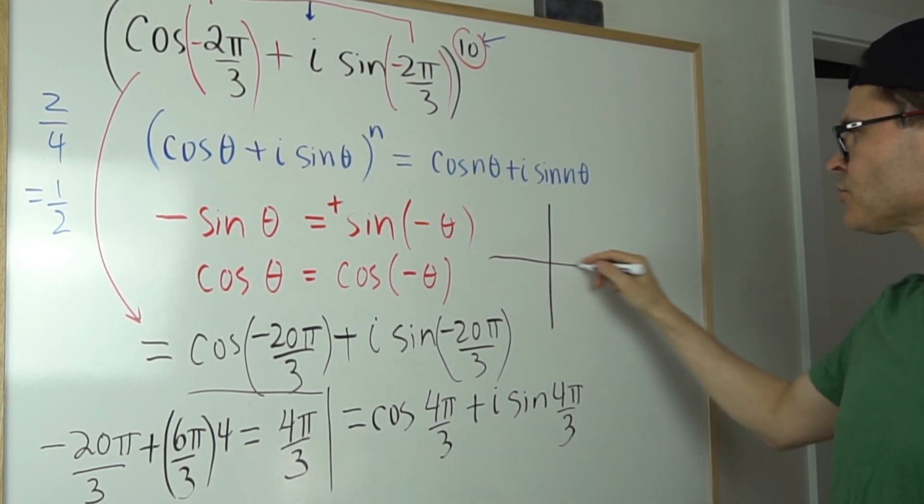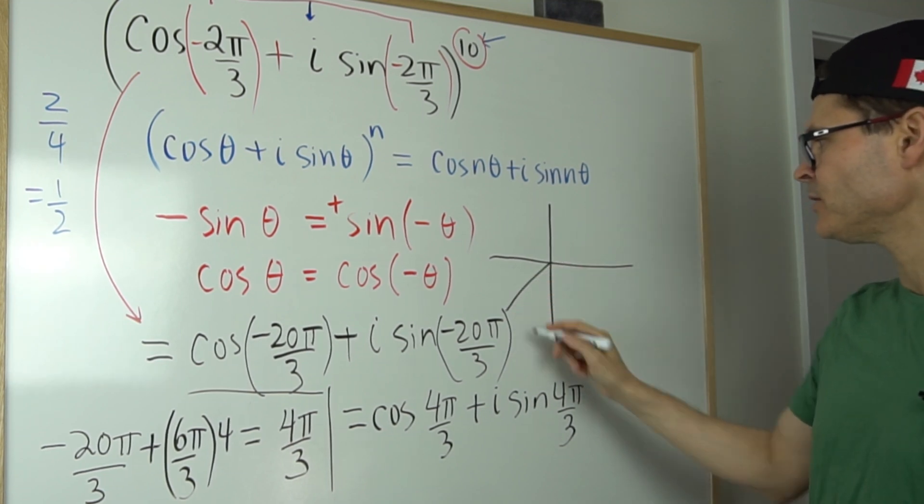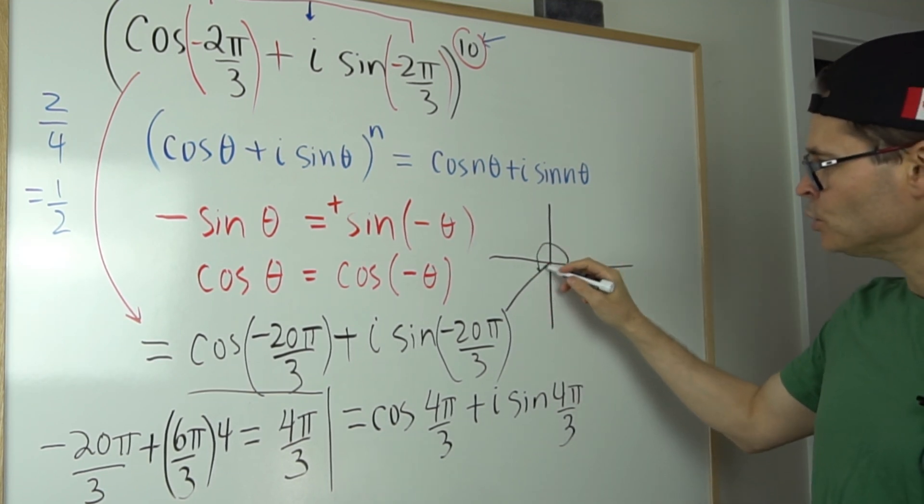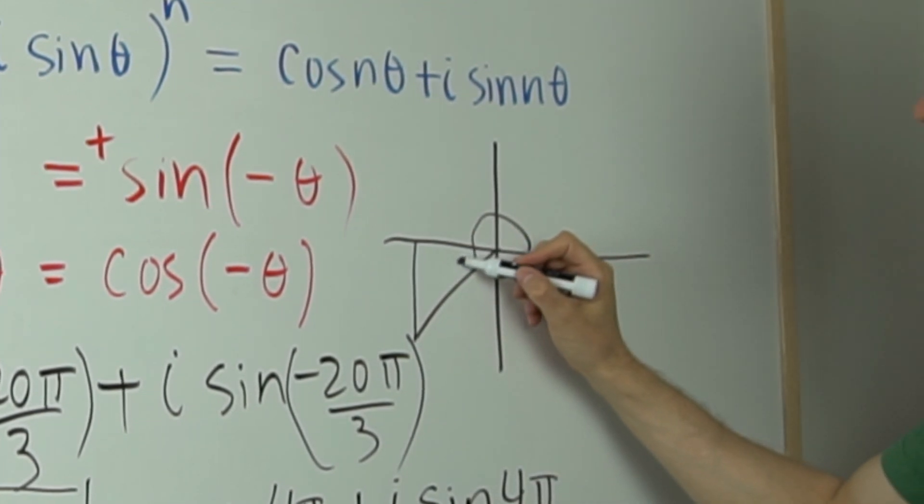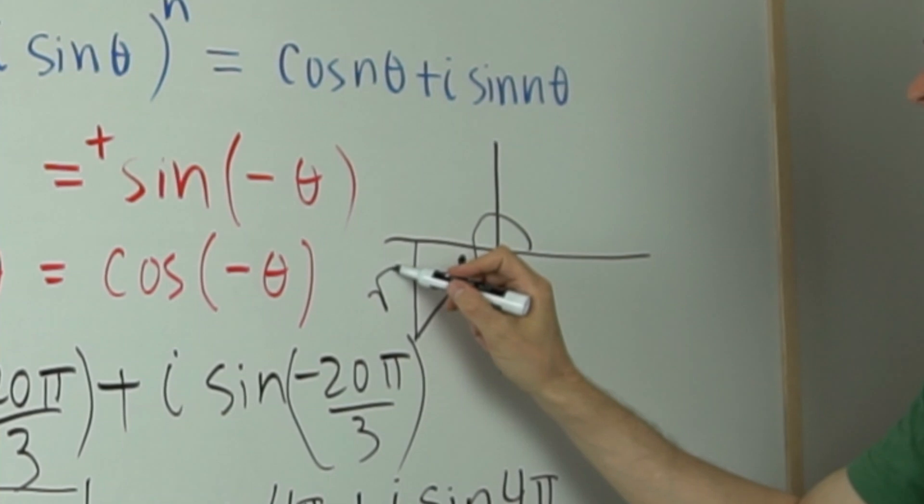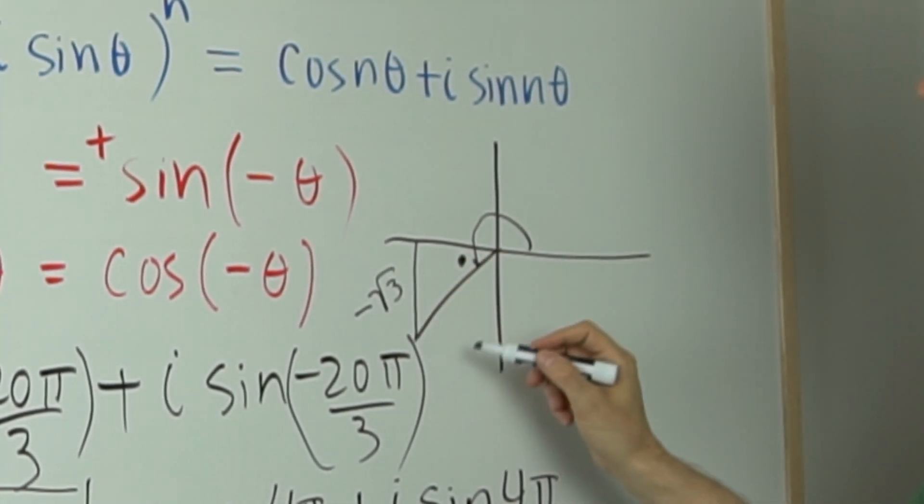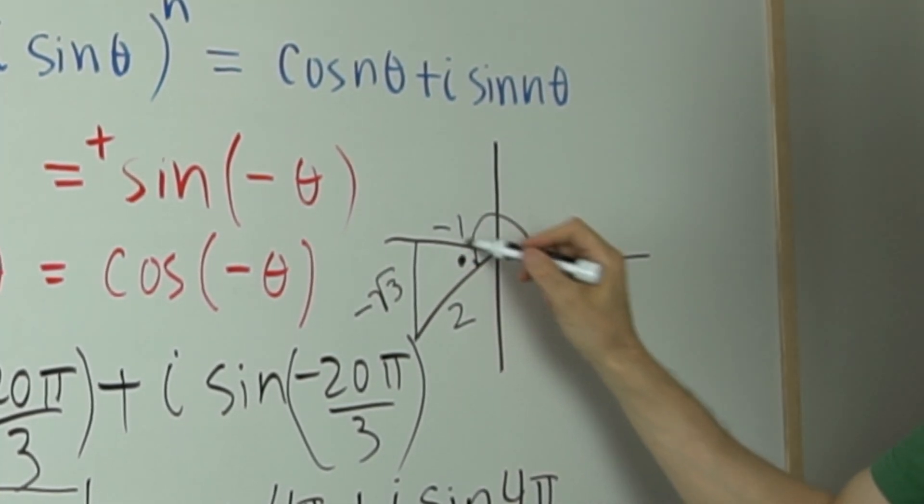And 4π over 3, I'll just draw it. 4π over 3 is going to be down here in the third quadrant. Boom. And so that means that my reference angle here is π over 3, meaning this is root 3 with a minus. This is 2 and this is negative 1.